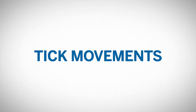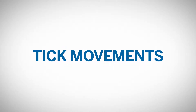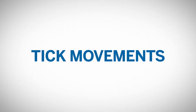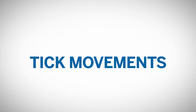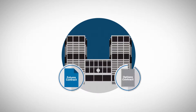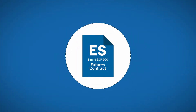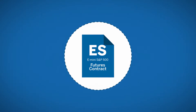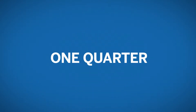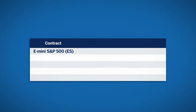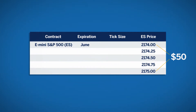All futures contracts have a minimum price fluctuation, also known as a tick. Tick sizes are set by the exchange and vary by contract instrument. For example, the tick size of an E-mini S&P 500 futures contract is equal to one quarter of an index point. Since an index point is valued at $50 for the E-mini S&P 500,